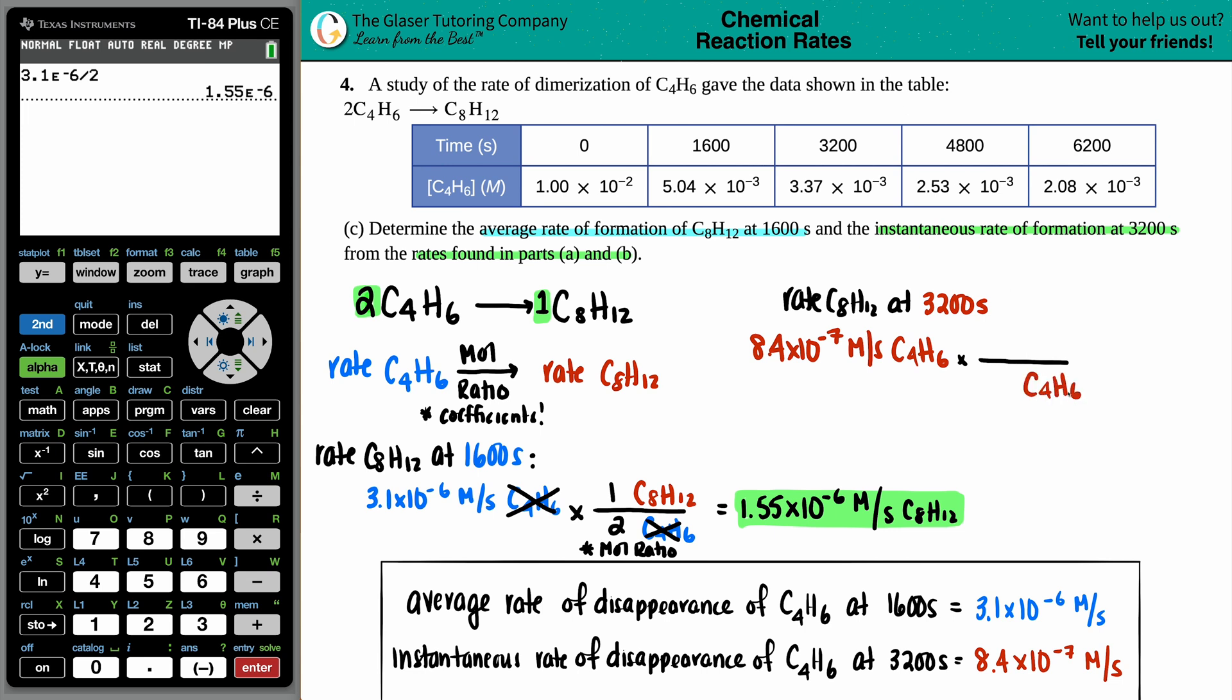C4H6 goes on the bottom and the C8H12 goes up on top. Same units, mole ratio 2 for every 1. The compound cancels out and now you have molarity per second of the C8H12. So 8.4 times 10 to the negative seven divided by 2, and there you go: 4.2 times 10 to the negative seventh molarity per second of the C8H12.